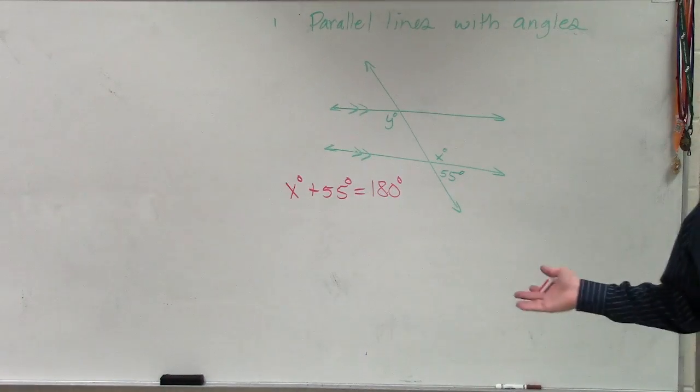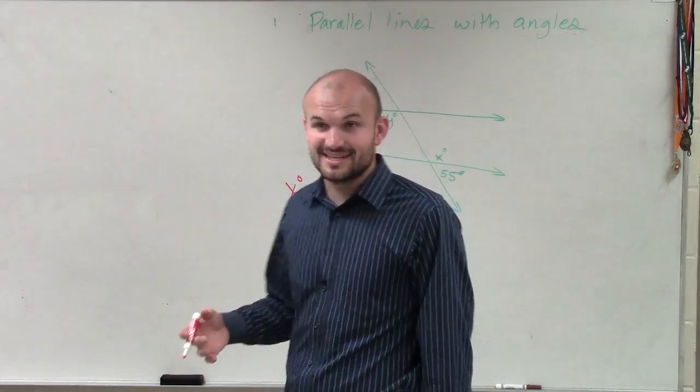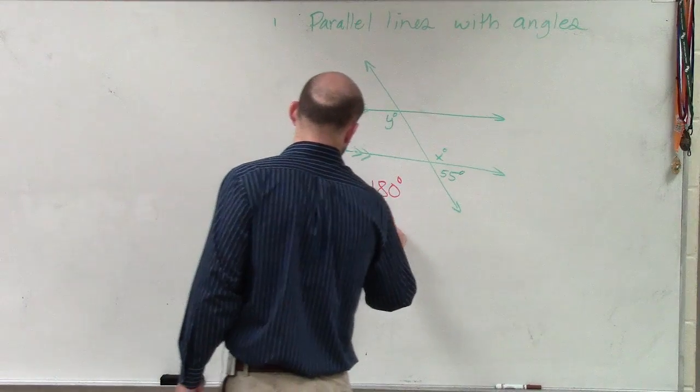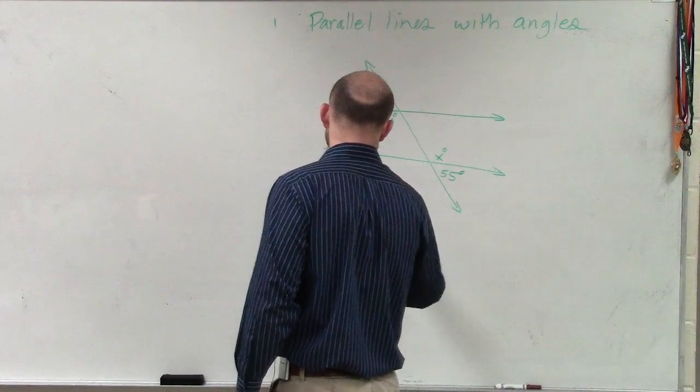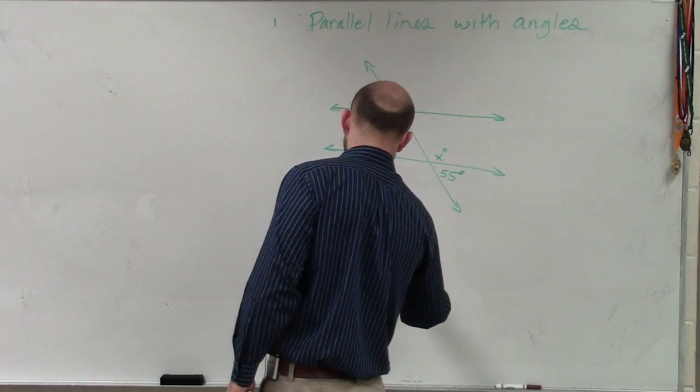So now I have a linear equation. Do you guys remember all those worksheets I gave you, all that practice on linear equations? So now we have to make sure we know how to solve. So I subtract 55 on both sides, and I get x equals 125 degrees.